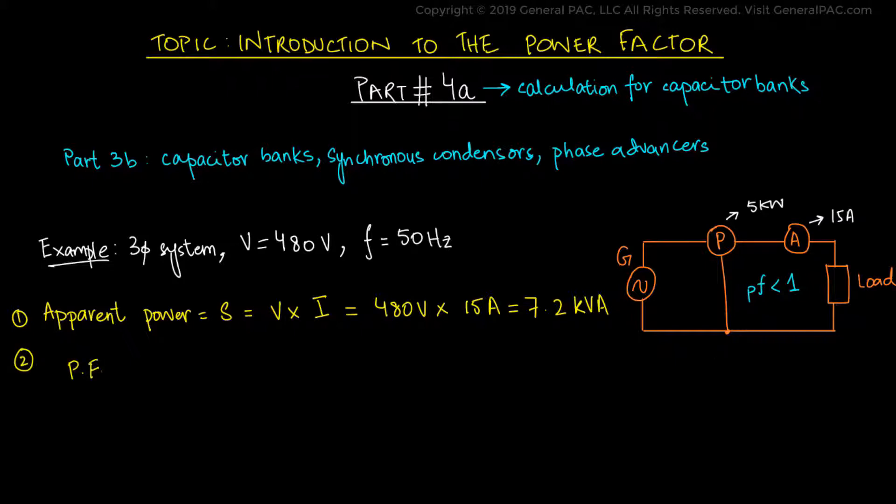The power factor equals the real power divided by the apparent power, which is 5 kW divided by 7.2 kVA, giving us 0.7. So the existing power factor is 0.7.